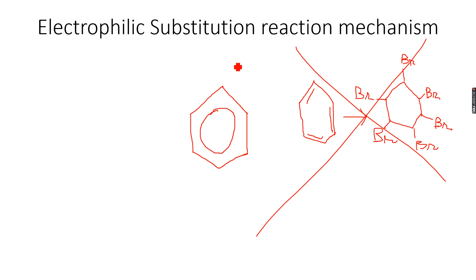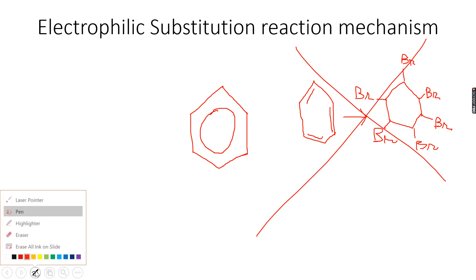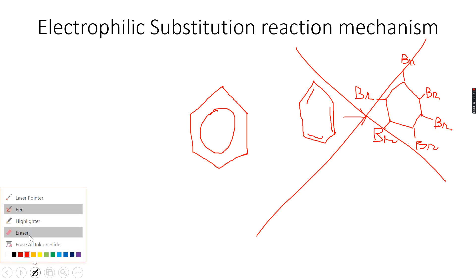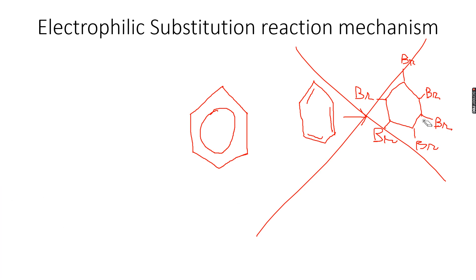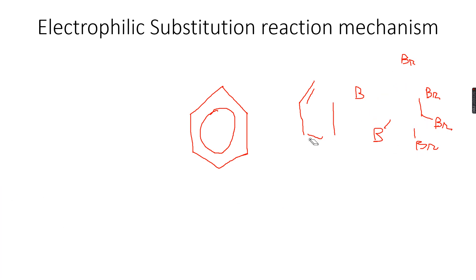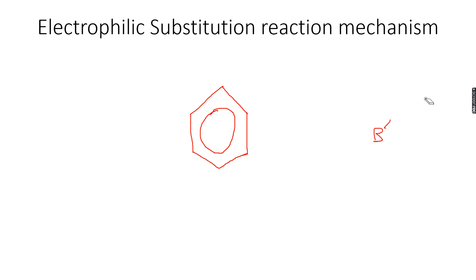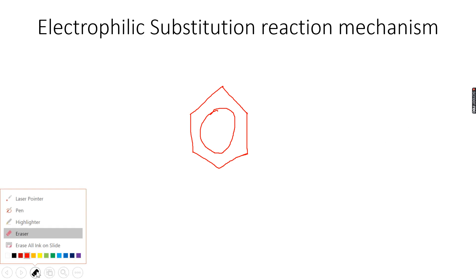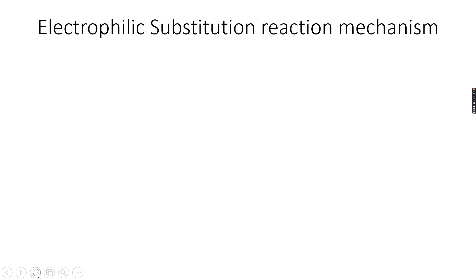So when we want to add something like bromine to benzene, we will use electrophilic substitution — replacing a hydrogen rather than adding alongside it. Now let's see how this mechanism looks.